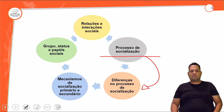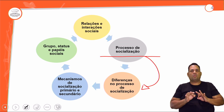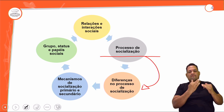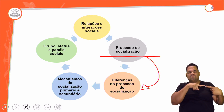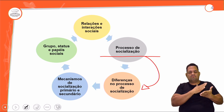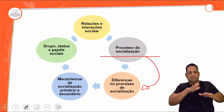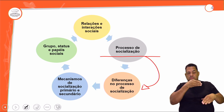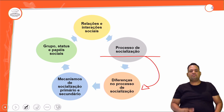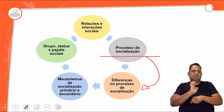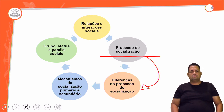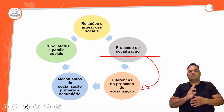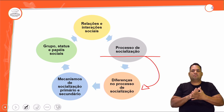Os mecanismos de socialização são dois: o primário e o secundário. O primário é feito pela família, que ensina os primeiros passos para que a gente possa se tornar um membro da sociedade. O secundário é tudo que vem depois da família: a escola, o Estado, a religião. O mecanismo primário é a família; secundário é tudo que vem depois dela.